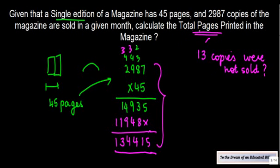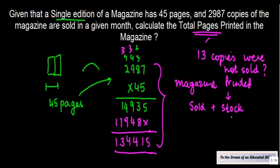Now, total pages printed in the magazine is going to be a sum of magazines printed. How do you calculate magazines printed? It is the ones which are sold plus which are lying in stock or which did not sell, which is 2,987 plus 13, or 3,000. So total magazines printed are 3,000.